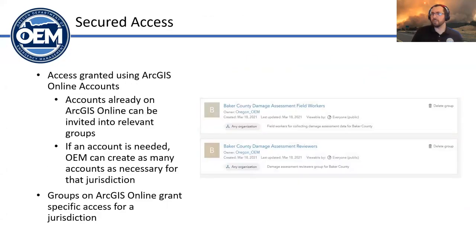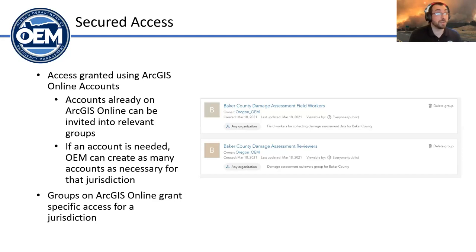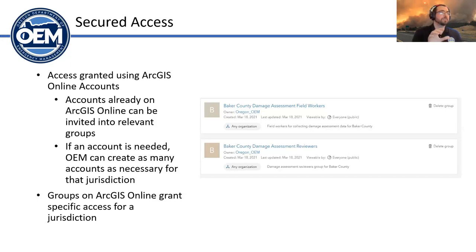For securing information, we're utilizing the ArcGIS Online framework to grant access on the secured side of the hub site. We've split everyone into two groups per jurisdiction — one group specifically for field workers going out to conduct assessments, and one group for damage assessment reviewers who review and approve for their jurisdiction. With 36 counties and two groups per county, these groups are set up so they can be joined from any organization. If folks already have an ArcGIS Online account, we can invite them in; otherwise, we use hub community accounts to add people into the system.